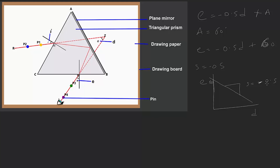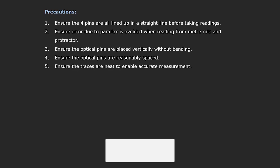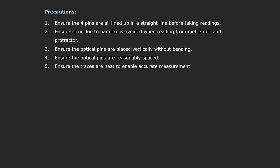Let's talk about the precautions to be taken in general. First, ensure the four pins are all lined up in a straight line for taking readings. Second, avoid errors due to parallax when reading from a meter rule or protractor. Third, ensure the optical pins are placed vertically without bending when tracing. Fourth, ensure the optical pins are reasonably spaced — P1 to P2 and P3 to P4. Fifth, ensure that the traces are neat to ensure accurate measurement.